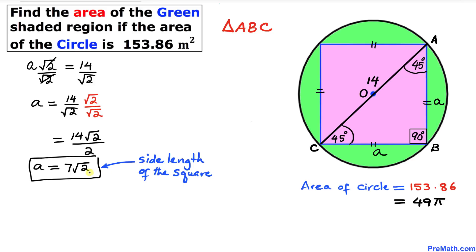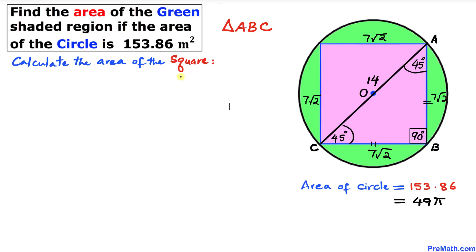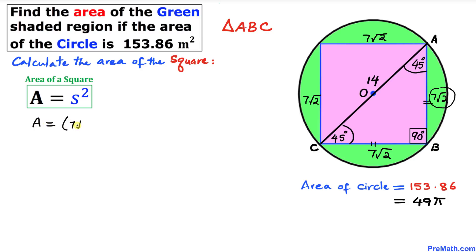So A equals 7 times square root of 2, which is the side length of the square. All four sides are 7 times square root of 2. The area of the square equals s squared, where s is the side length. Substituting, area equals (7 times square root of 2) squared, which gives 49 times 2, so the area of the square is 98 square meters.